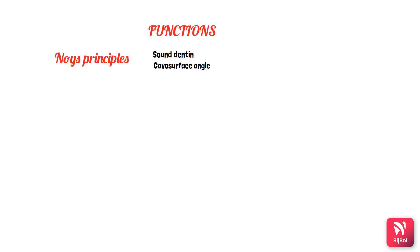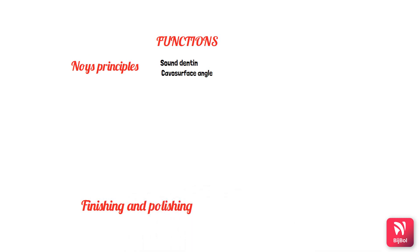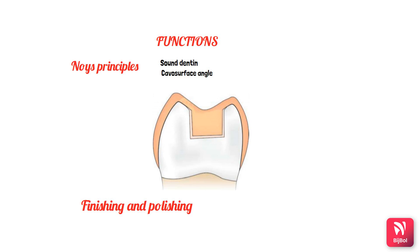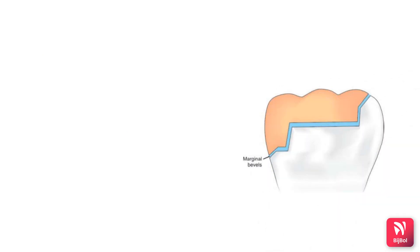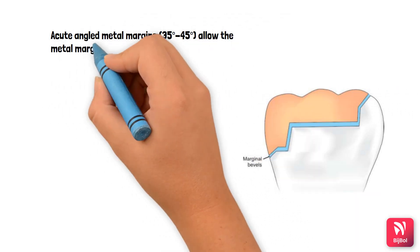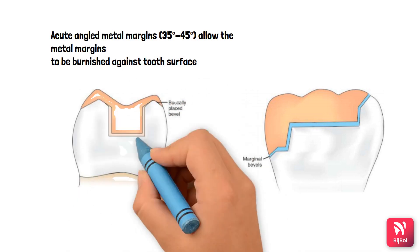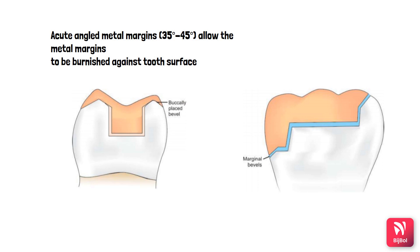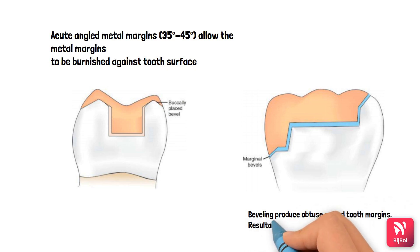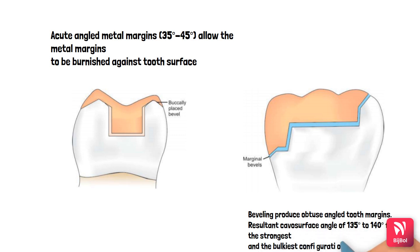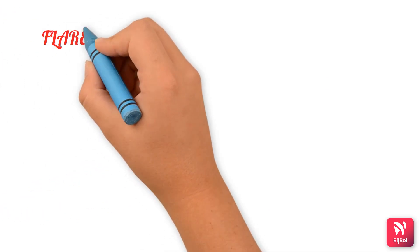The cavosurface angle should also be trimmed to remove unsupported enamel. Finishing and polishing of the cavosurface enamel provides a lap sliding fit of the cavity. The marginal bevel also reduces the space between the tooth structure and the restoration, helping in retention. An acute-angled metal margin of 35 to 45 degrees allows the metal margins to be burnished against the tooth surface. This creates an obtuse-angled tooth margin with a cavosurface angle of about 135 to 145 degrees, which is the bulkest and strongest configuration for any tooth margins.